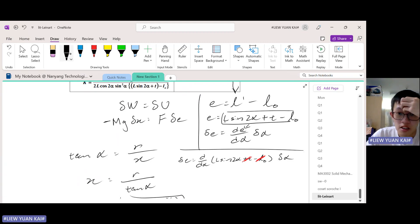Differentiation of sine is cos, and this becomes cos. Then we need to differentiate the inside. Differentiation of 2α is 2. Then this becomes this. So we have this.